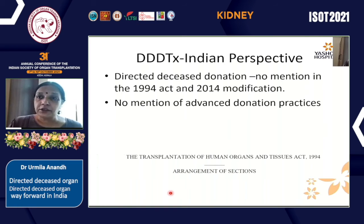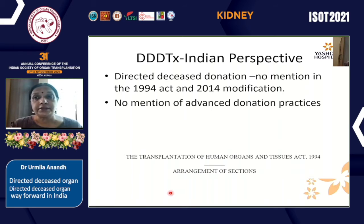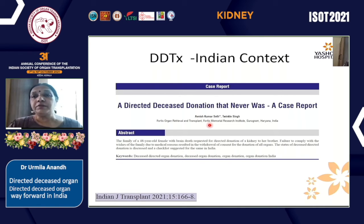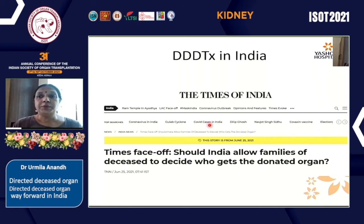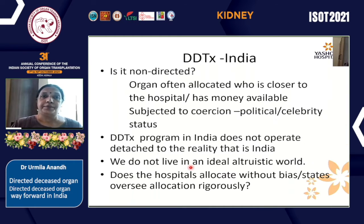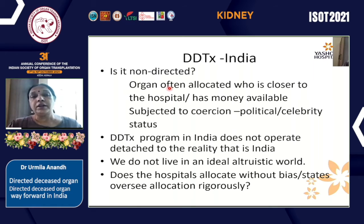In the Indian context, directed deceased donation finds no mention in the 1994 Act or the 2014 codification, and there are no mentions of advanced donation practices. A paper published in the Indian Journal of Organ Transplantation considered a directed deceased donation case, but it fell through because of medical unsuitability. There have been newspaper debates — for example, in the Times News Network — asking whether India should allow families of the deceased to decide who gets the donated organ. We also need to acknowledge that while deceased donor transplantation in India is officially non-directed, in clinical practice organs are often allocated to those closer to the hospital or with money available.